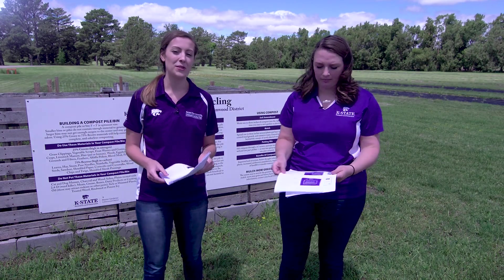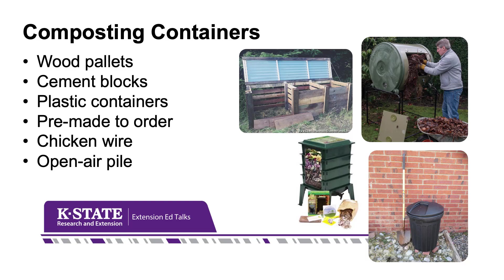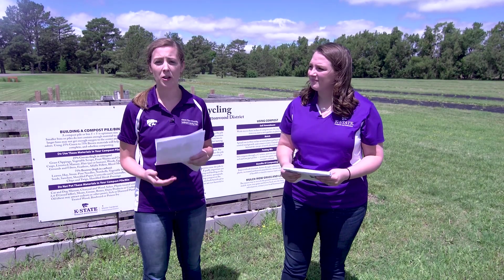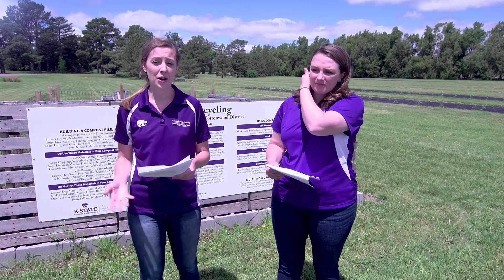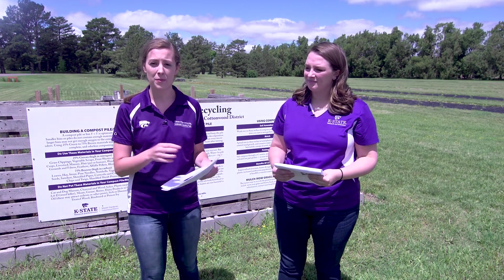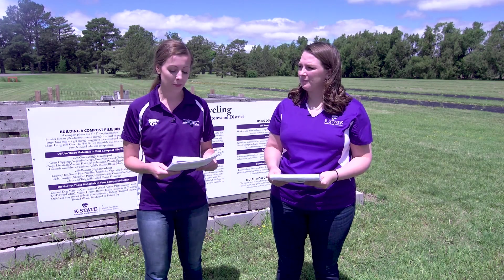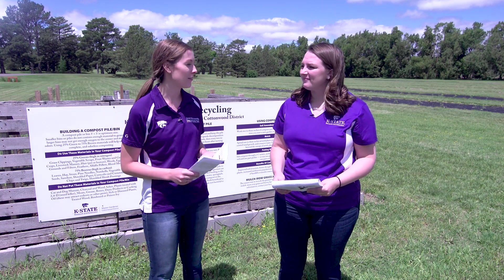When you want to get started with composting, you're going to need some type of container and it can be pretty simple. It can be wooden pallets, cement blocks, or even a plastic container. There are also more elaborate systems — you can buy a composting bin from garden catalogs or garden centers, or you can use chicken wire or just an open pile concept. Be creative and use what you have around your home.